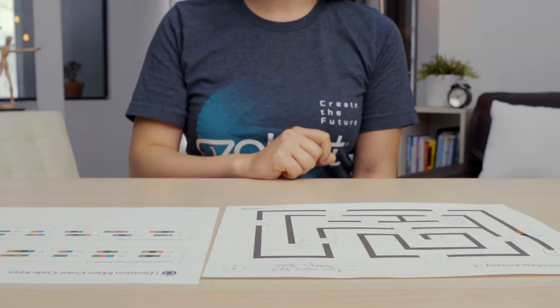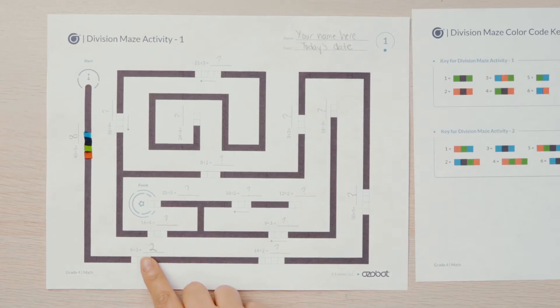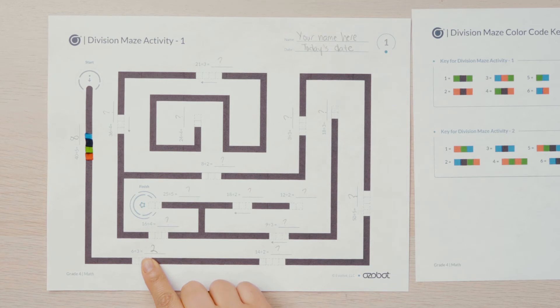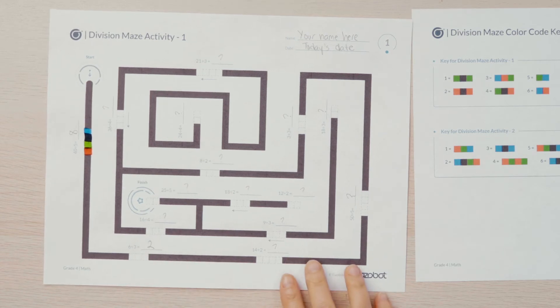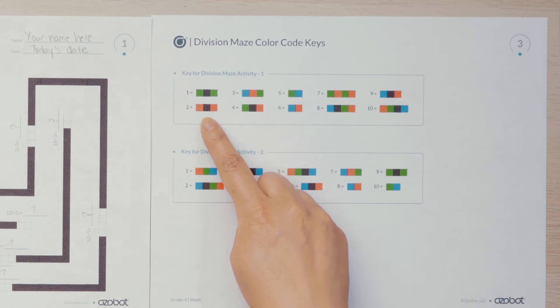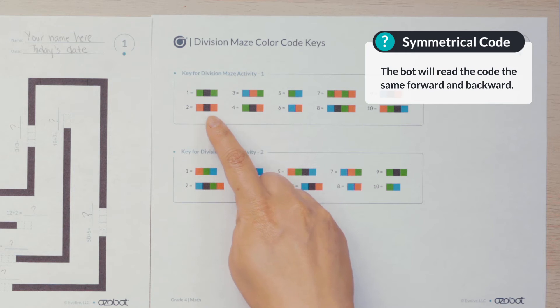Let's take a look at our next problem. 6 divided by 3 equals 2, and we can find 2 in our answer key. The code for 2 is red, black, red. This is a symmetrical color code because the bot will read it the same way forwards and backwards.